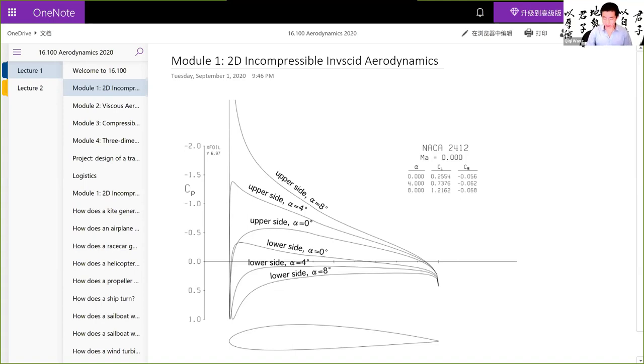So I'm going to discuss what all of these means. Inviscid, what does inviscid mean? We're going to be discussing what incompressible means, and we're going to be also discussing what two-dimensional means. So let's first talk about inviscid.